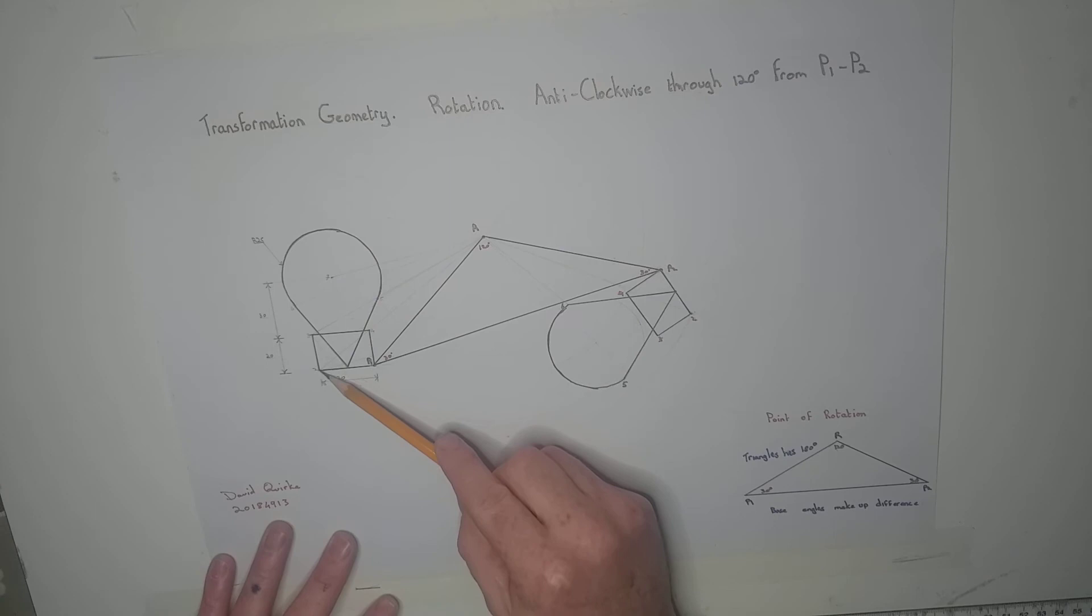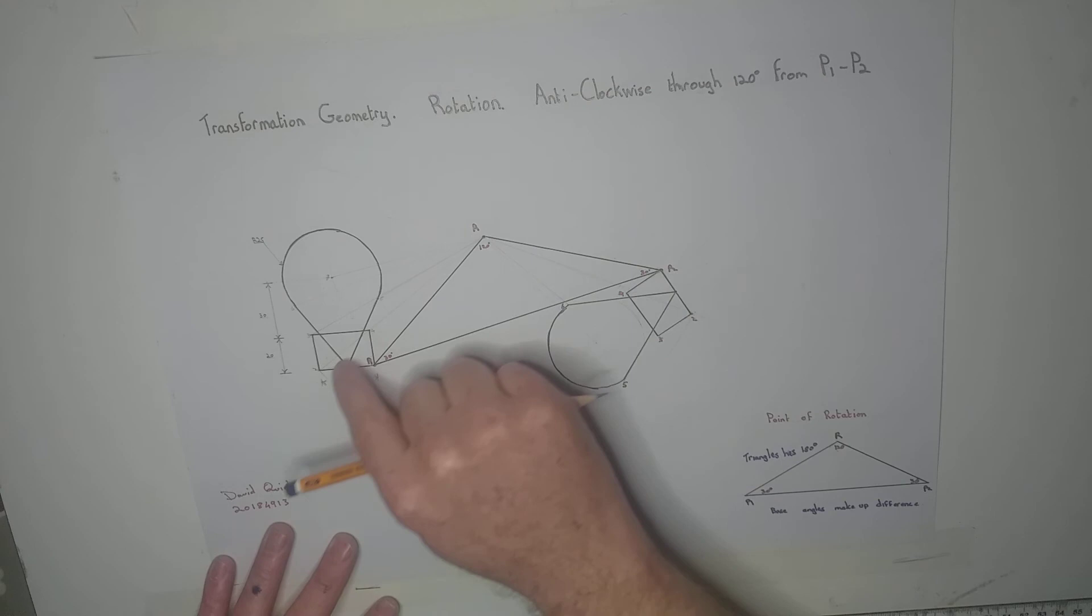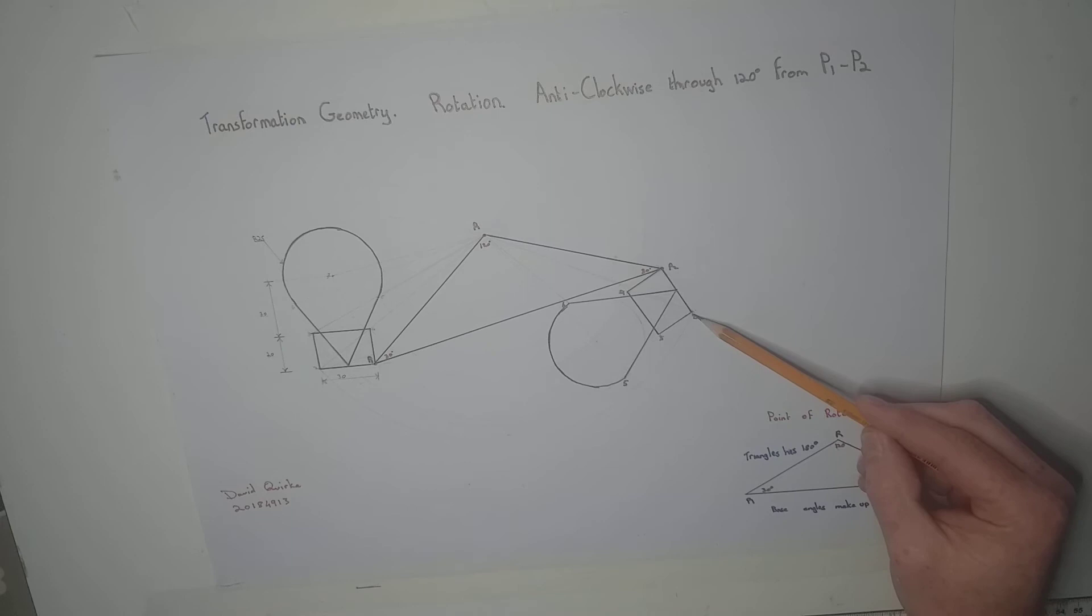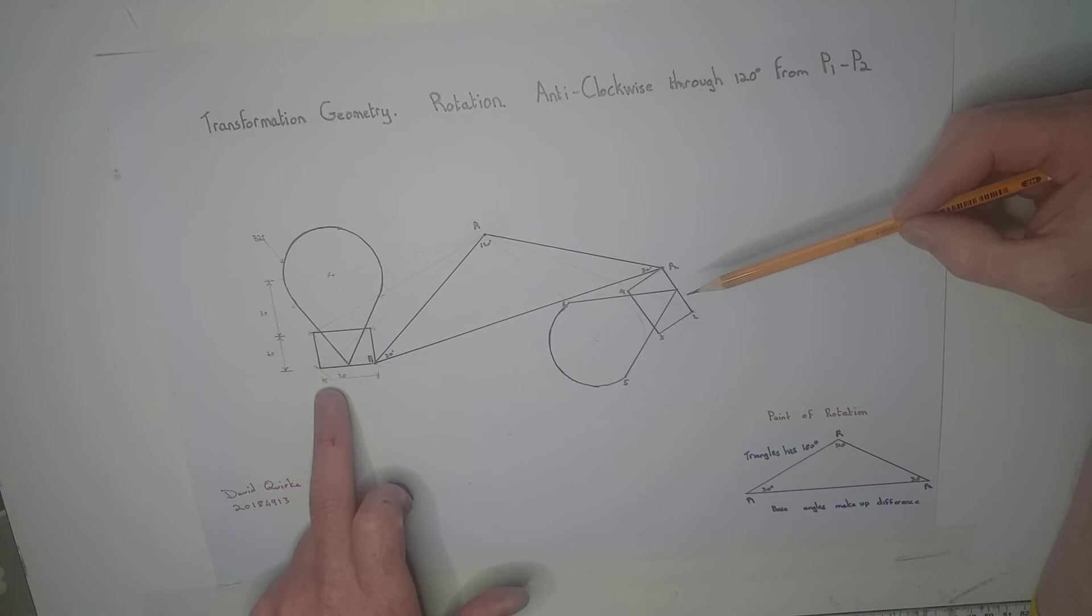What I did is I connected point 2 to my point of rotation, and using a protractor on that line from 2 to the point of rotation, I marked off 120 degrees here, which gave me my point. I connected P2 to point 2, which is our baseline here.